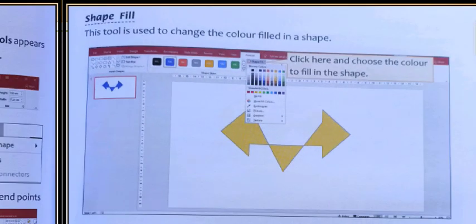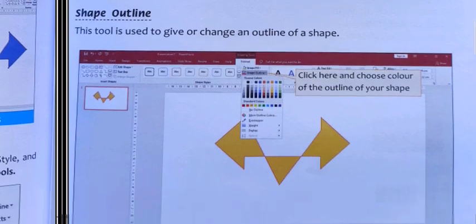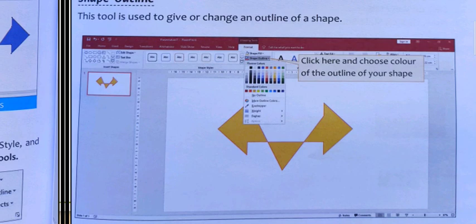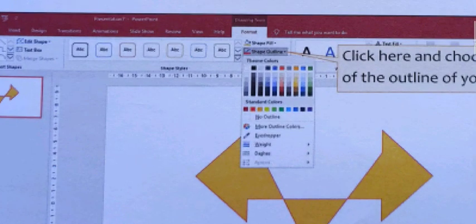Next is Shape Outline. This tool is used to change the outline of the shape. You can see the outline option is here and you can choose different types of colors from this section as per your content and choice.